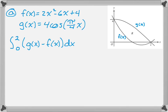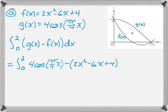Now we actually have to do it. I'm going to substitute in for g(x), keep the minus and the quantity, so 2x² - 6x + 4, and then dx.